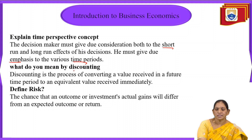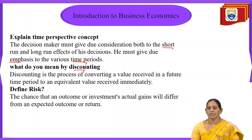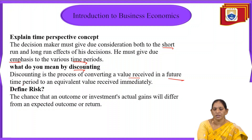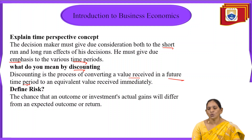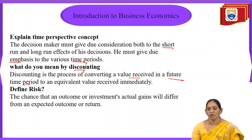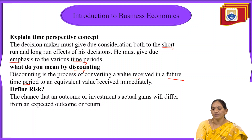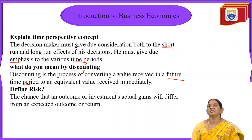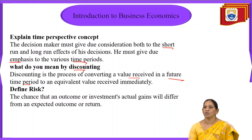Next, what do you mean by discounting? Discounting is a process of converting a value received in the future time period to its equivalent value received immediately. It is a future perspective process: what we receive in the future should be equivalent to the value received now. This is called the discounting principle.